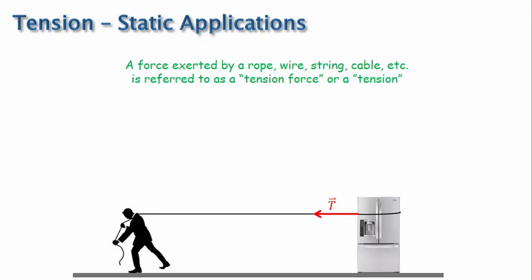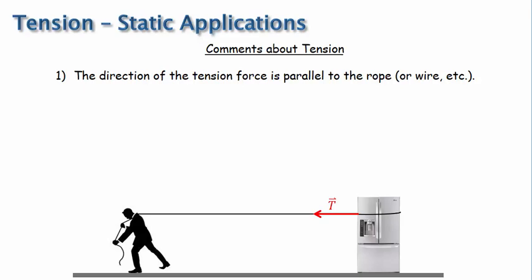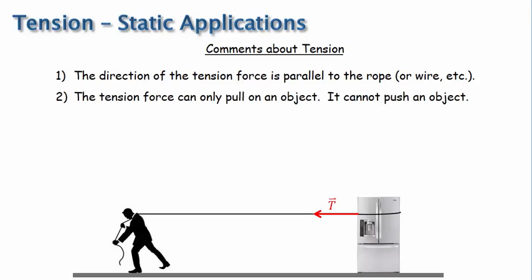Here are some comments about the way we will apply tension. Number one: the direction of the tension force is parallel to the rope or wire, etc. That's why in the picture the tension force is shown parallel to or along the length of the rope. Number two: the tension force can only pull on an object. It cannot push an object. This is generally intuitive to us because the rope or wire, etc., is flexible and bends if you try to use it to push an object.